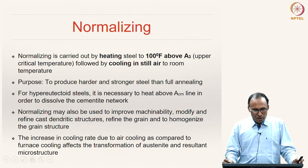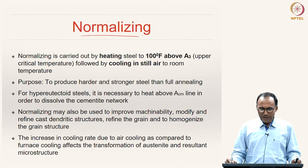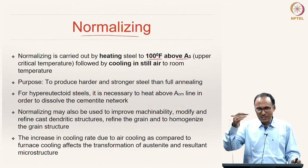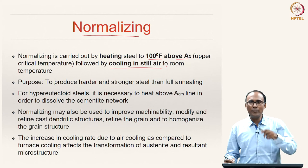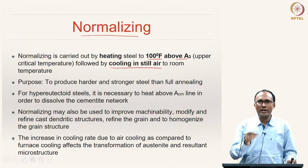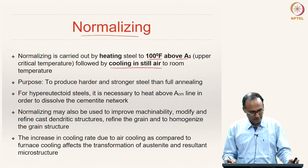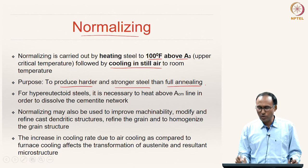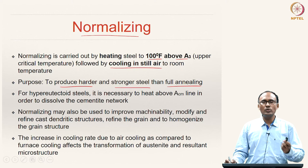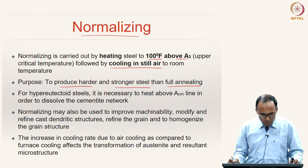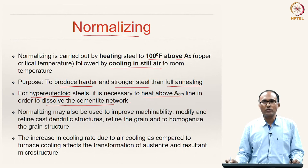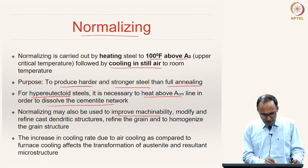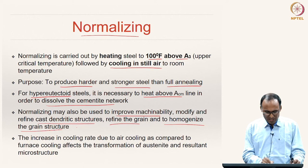The next heat treatment process is normalizing, which is carried out by heating the steel above A3 — about 100–110°F above A3 — followed by cooling in still air. This faster cooling rate compared to furnace cooling produces harder and stronger steel than full annealing. For hyper-eutectoid steels it is necessary to heat above the ACM line to dissolve the cementite network. Normalizing can also improve machinability, modify and refine cast dendritic structures, refine the grain, and homogenize the grain structure.